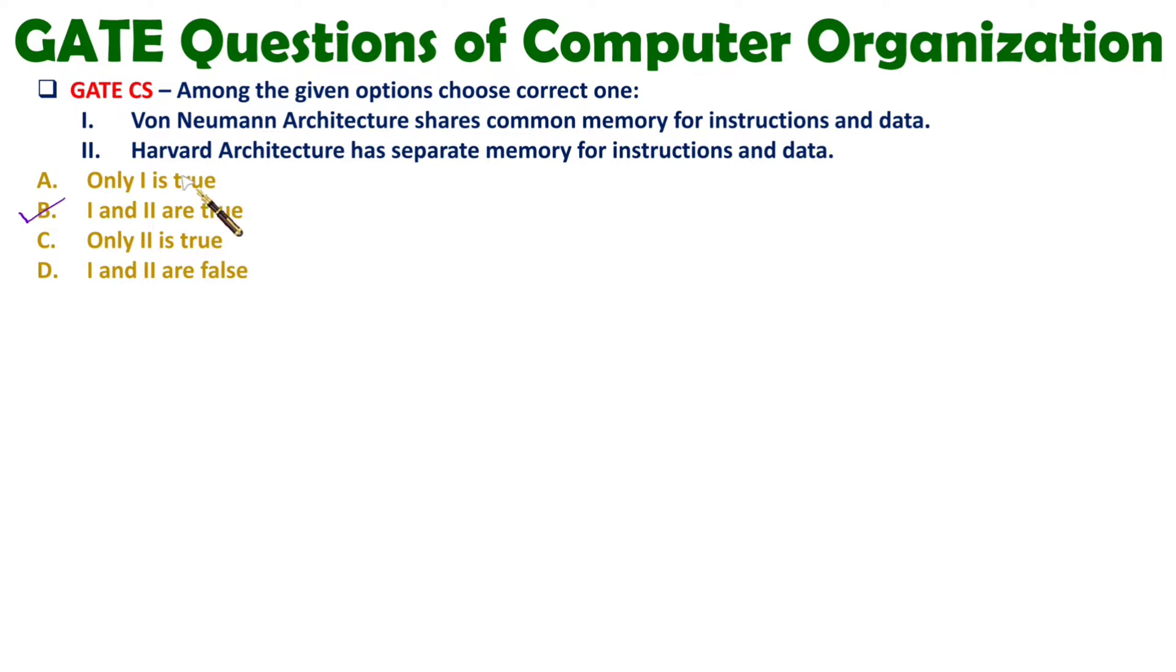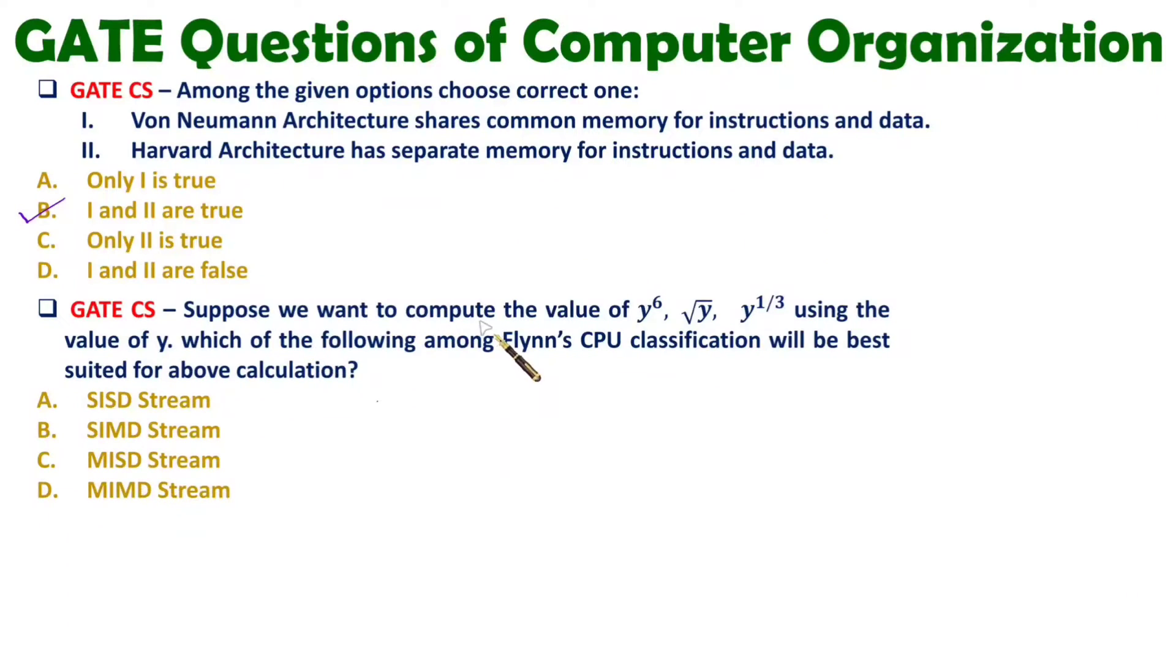Let us have second question. In second question suppose we want to compute the value of y to the power of 6, we want to compute square root of y, or we want to compute y raised to one third using the value of y. Which of the following among Flynn's CPU classification will be best suited for above calculation? Here first of all we need to understand what we need to compute. If you observe here there are three different operations that we need to do. First operation is raised to 6, second is square root of y, and third operation is y to the power one third. So here multiple instructions that we need to perform.